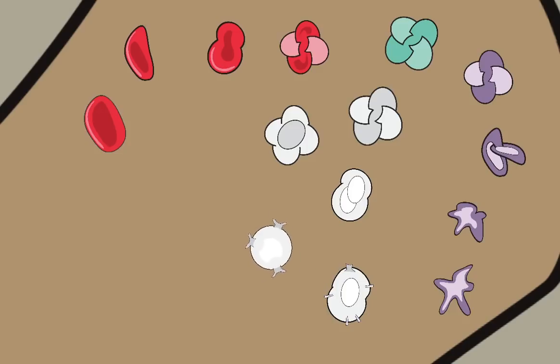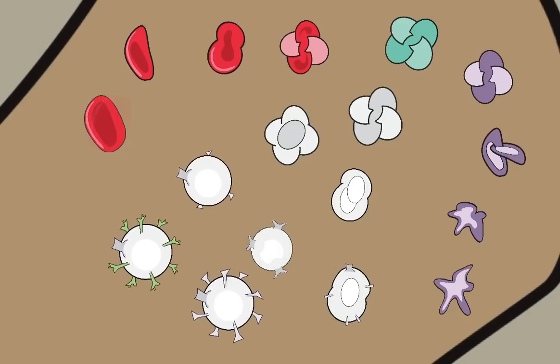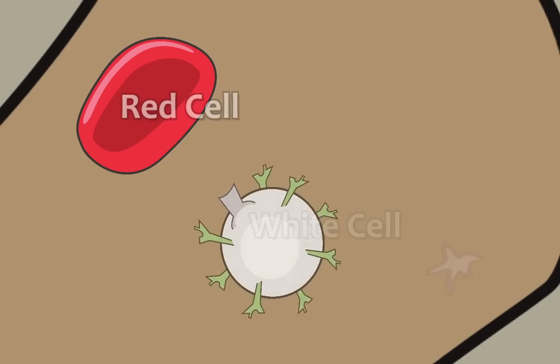There are three primary kinds of cells created in this process: red cells, white cells, and platelets.